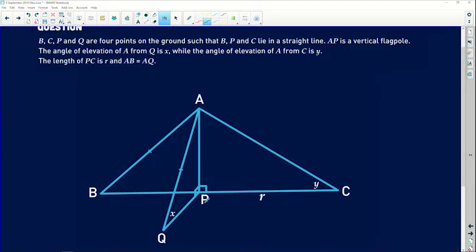The angle of elevation of A from Q is X. Where is this X? Well, it's right there next to Q. That's where the angle of elevation is of A from Q. And then, while the angle of elevation of A from C is given to us as Y. So this one is actually given to us as Y. Now, the length of PC is R units. We can see there it's labeled for us nicely there. And we are also told that AB is equal to AQ.